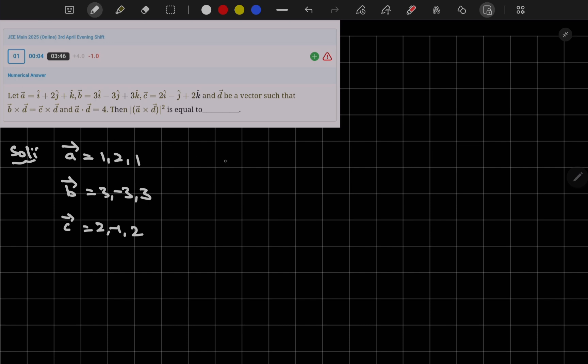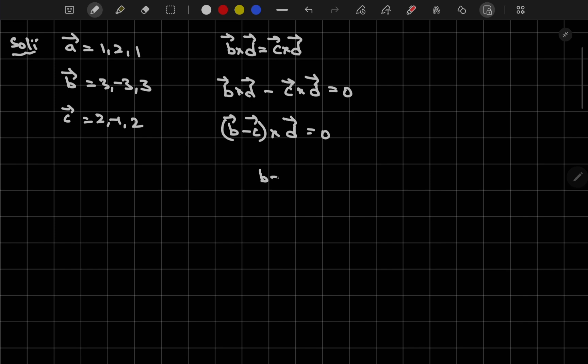Now here one condition is given B cross D will be equal to C cross D. Now let me bring it to left hand side. B cross D minus C cross D value will be equal to 0. Now let me do D vector as common, then B minus C cross D vector will be equal to 0. So if you observe here, cross product is equal to 0, this meaning is B minus C is parallel to D vector.